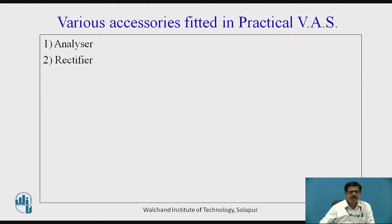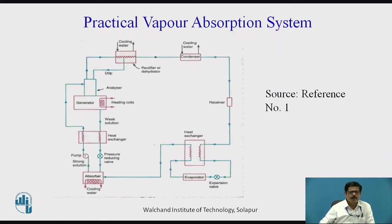Now what is analyzer? In the generator, we are supplying the heat which can be supplied by using either steam or hot water or any other form of waste heat which is available. So in the generator, we receive the strong solution of aqua ammonia. The function of the generator is that we want to separate the ammonia vapor — only ammonia vapor should pass to the condenser — and the remaining water should go back to the absorber, because it will be available for absorbing the ammonia vapors coming from the evaporator.